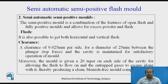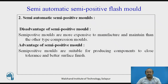Semi-automatic semi-positive mold: it is a combination of features of the open flash and fully positive mold, and allows for excess powder and flash. It is also possible to get both horizontal and vertical flash. A clearance of 0.025 mm per side for a diameter of 25 mm between the plunger (top force) and the cavity is maintained for satisfactory operation. Disadvantage: more expensive to manufacture and maintain than other types. Advantage: semi-positive molds are suitable for producing components to close tolerance and for better surface finish.